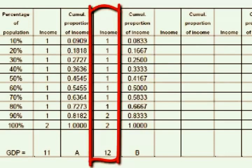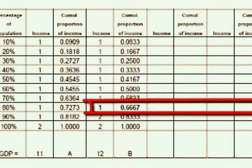We can calculate the Gini coefficient using the shortcut formula. If eight individuals earn $1 and two individuals earn $2 each, then the poorer 80% has 8 out of 12, which is two-thirds of the income.